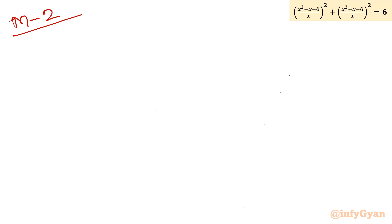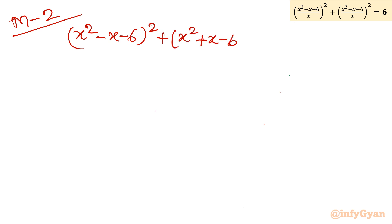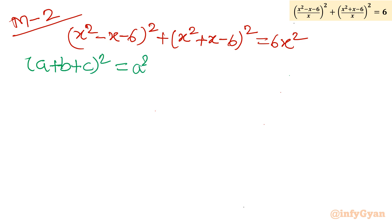Now we will take up the second method of solving this problem, using algebraic identities. Writing our equation: (x² - x - 6)² + (x² + x - 6)² = 6x². We will use the identity (a + b + c)² = a² + b² + c² + 2(ab + bc + ca).